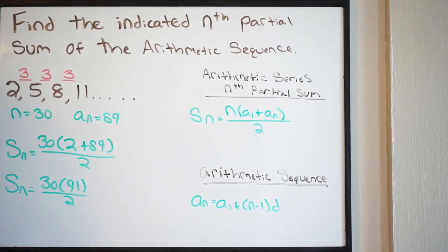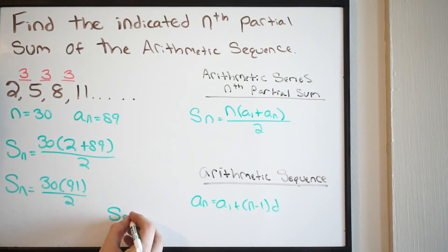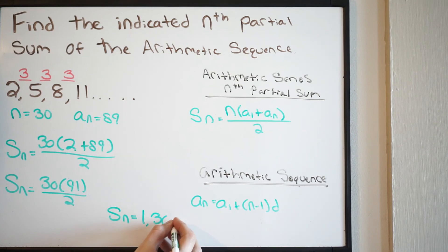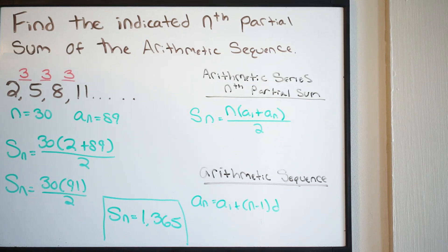Let's plug this into our calculator: 30 times 91, divided by 2, gives us a value of 1,365. So our answer is 1,365. This tells us that the sum of all the terms in this arithmetic sequence going up to the 30th term is 1,365.